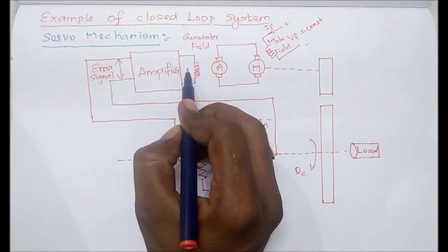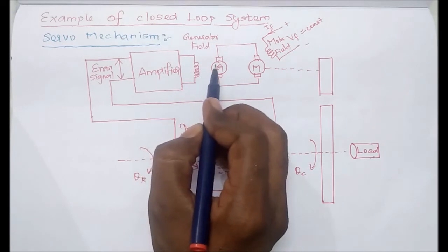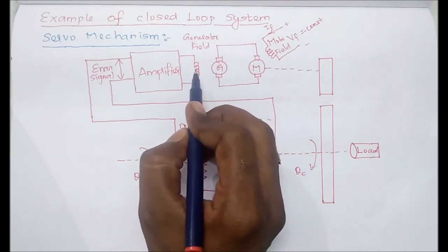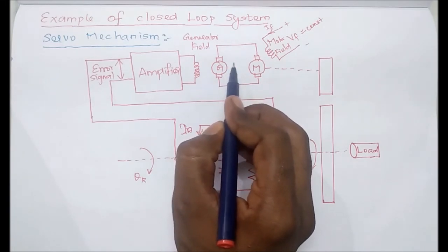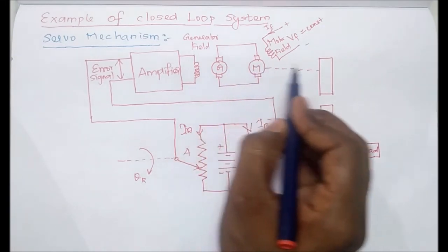According to the field, this generator will vary its generated voltage. That will be supplied to the motor, so the motor will rotate.